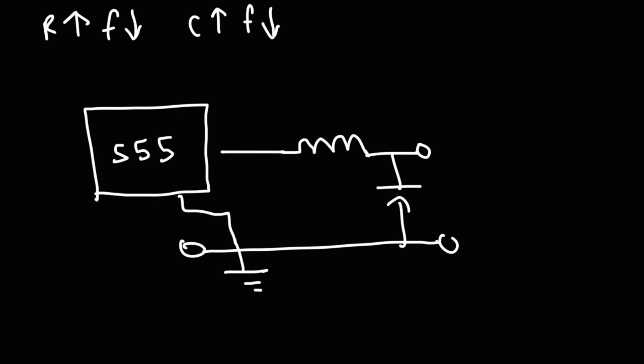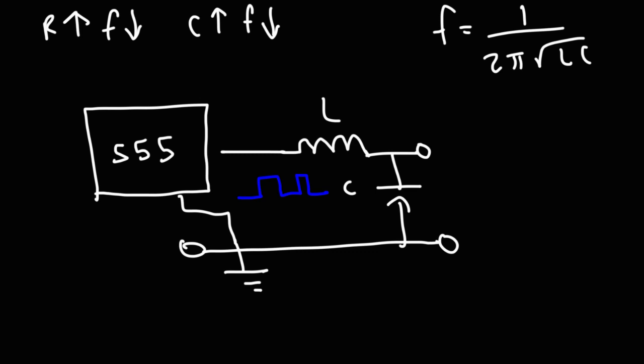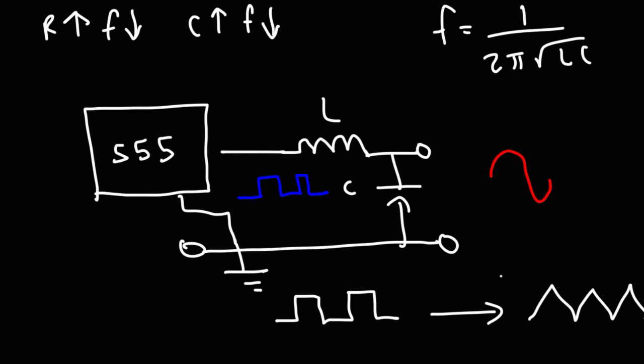As long as the frequency of the square waves matches the frequency of the LC network — using the formula we talked about — the square wave can be converted into a sine wave, but you need to use the appropriate L and C values. You can also convert a square wave into a triangular wave using an RC network, with the appropriate values. So with the 555 timer, you can make a square wave, a sine wave, or a triangle wave.